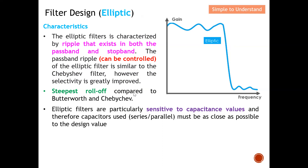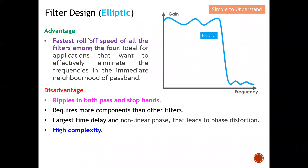The Elliptic filter has the steepest roll-off compared to all four, in fact steeper than Bessel as well. Elliptic filters are particularly sensitive to capacitor values — capacitors used either in series or parallel must be chosen as close as possible to the design value. Because of this sensitivity, and because we don't have a huge range of capacitor values available, it can be a big challenge when designing filters using the Elliptic method.